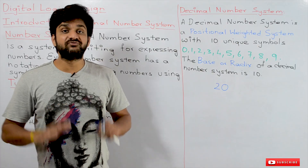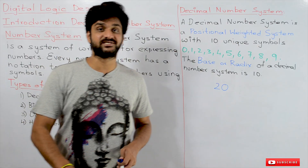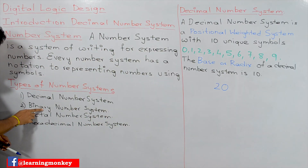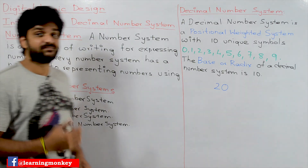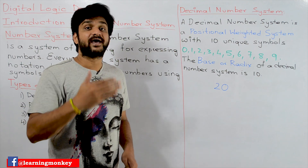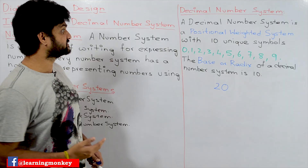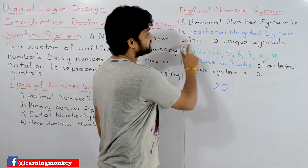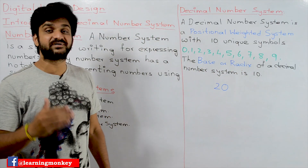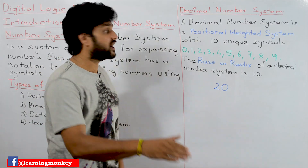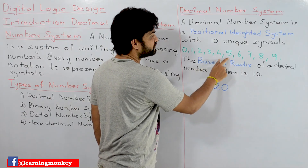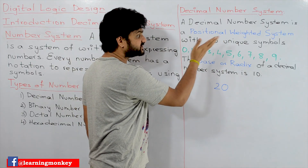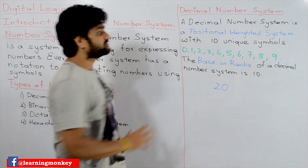In this class we will understand the decimal number system; in later classes we will cover binary, octal, and hexadecimal. The decimal number system is a positional weighted system with 10 unique symbols. The symbols are: 0, 1, 2, 3, 4, 5, 6, 7, 8, and 9. These are the symbols used in the decimal number system.